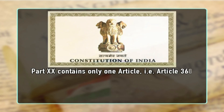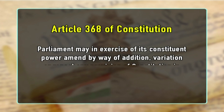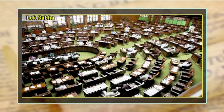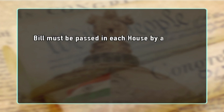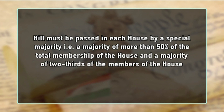The Constitution of India, in its Part 20, contains only one article — Article 368 — which deals with the power of the parliament to amend the constitution and the procedure for its amendment. Under this article, parliament may, in exercise of its constituent power, amend by way of addition, variation or repeal any provision of the constitution in accordance with the procedure laid down in this article. An amendment may be initiated only by the introduction of a bill in either house of parliament. The bill can be introduced either by a minister or by a private member and does not require prior permission of the president. The bill must be passed in each house by special majority — that is, a majority of more than 50% of the total membership of the house and a majority of two-thirds of members of the house present and voting.